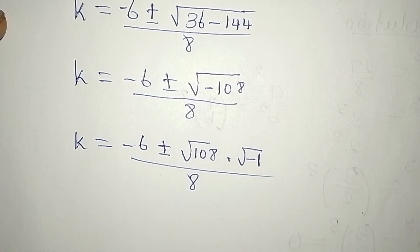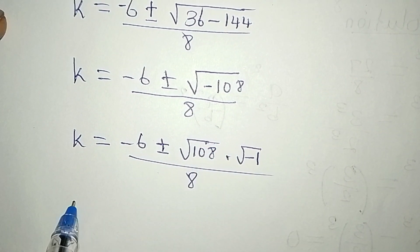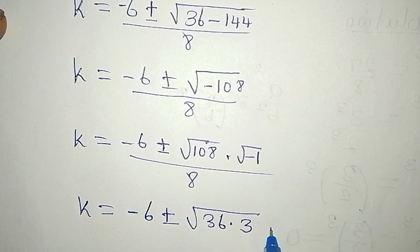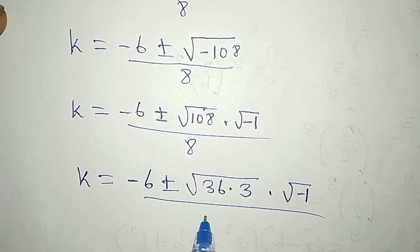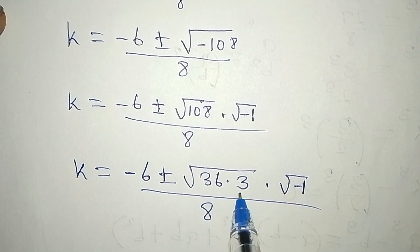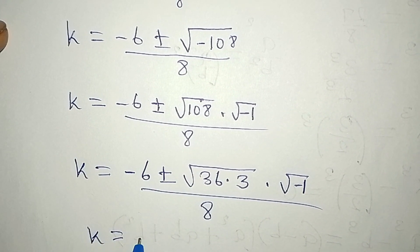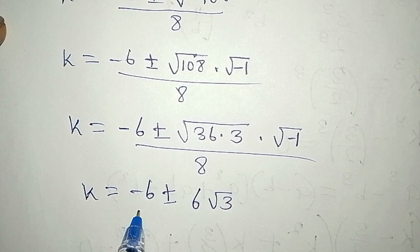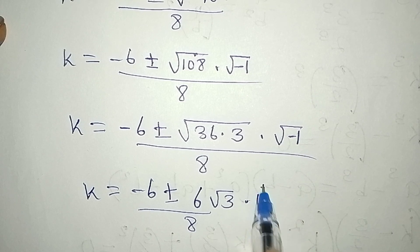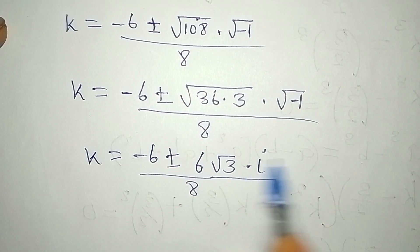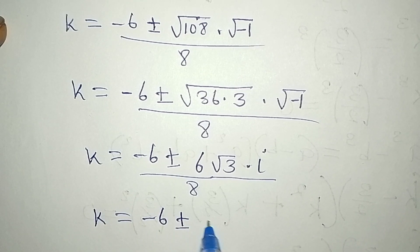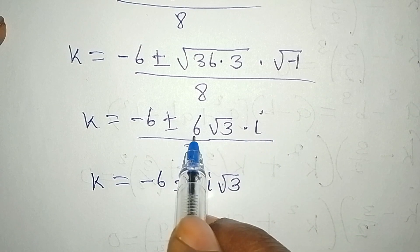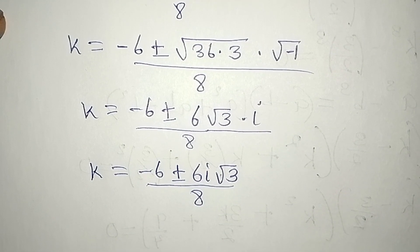Now 108 can be simplified: √108 = √(36·3) = 6√3. Since √(−1) is imaginary and equals i, k equals (−6 ± 6i√3) / 8. Rearranging so that i and 6 are multiplied first, we have (−6 ± 6i√3) / 8.